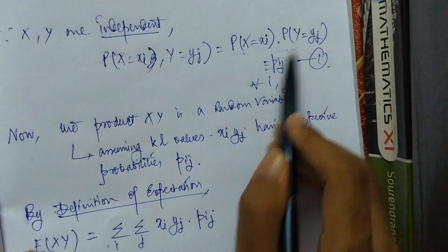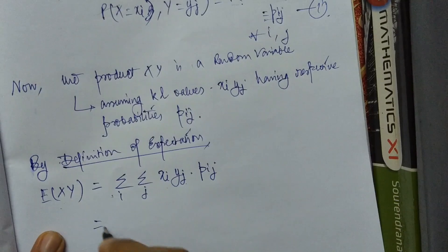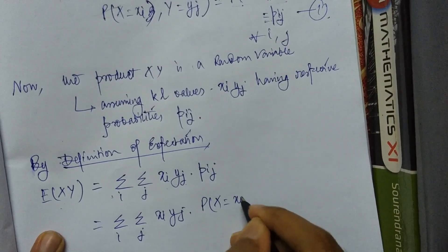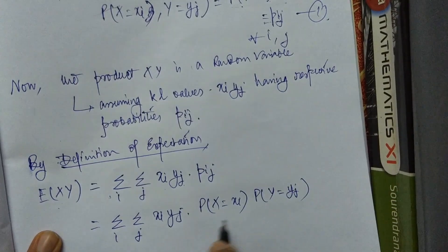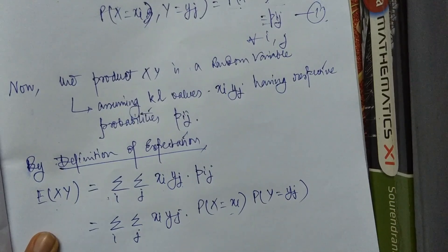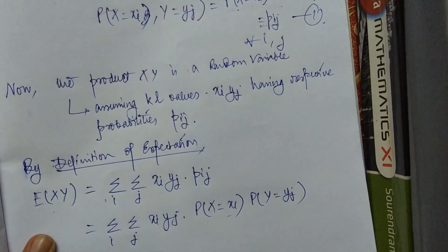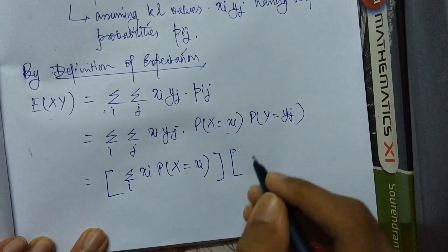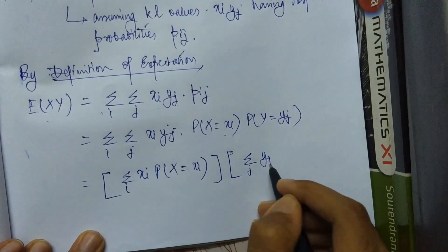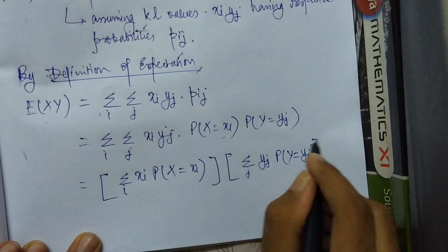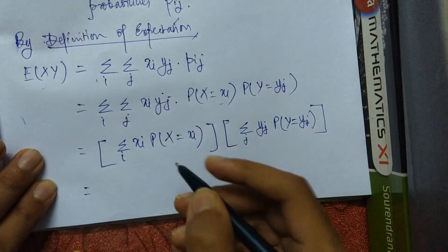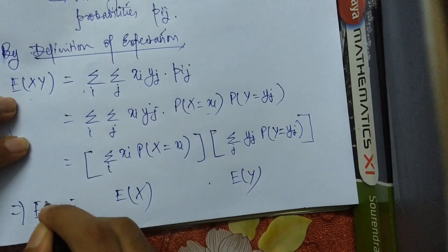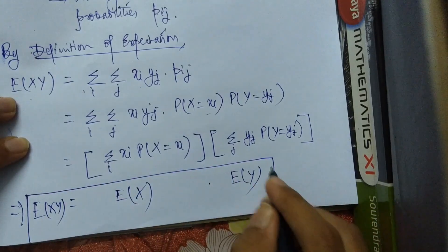We substitute p_ij = P(X = xi)·P(Y = yj) into the expression. The double summation Σi Σj xi·yj·P(X=xi)·P(Y=yj) separates into the formula for E[X] times the formula for E[Y]. Hence we have established that E[XY] = E[X]·E[Y].